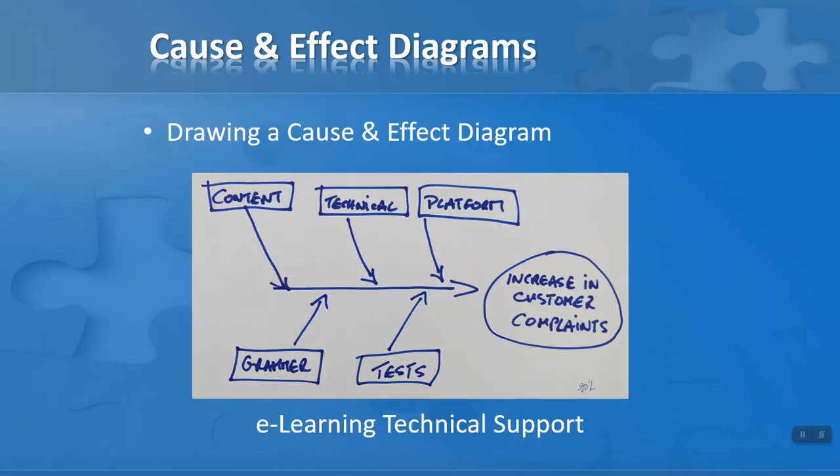So speaking of technical support, in the video that's going to follow this lesson—my how-to video on how to draw a cause and effect diagram—I'm going to work through a problem: the increase in customer complaints in an e-learning company. E-learning technical support will be reporting a sudden increase in customer complaints, and we want to figure out why that is. So I've come up with five general or generic types of main categories here. For e-learning technical support I've decided that the content of the e-learning product could be a problem. Is it a technical issue, or is it a platform or delivery issue? At the bottom of the diagram I've just two categories: could it be the grammar or the text of content within the e-learning content, or is it something to do with the assessments and tests that go with the content?